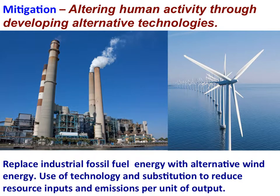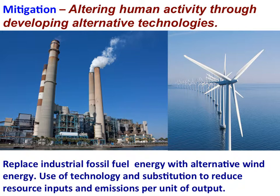A mitigation strategy to reduce the causes of climate change would be to increase the use of renewable energy forms, such as wind energy. We should replace industrial fossil fuel energy with alternative wind power energy. This is strategy one: use of technology and substitution to reduce resource inputs and emissions per unit of output.